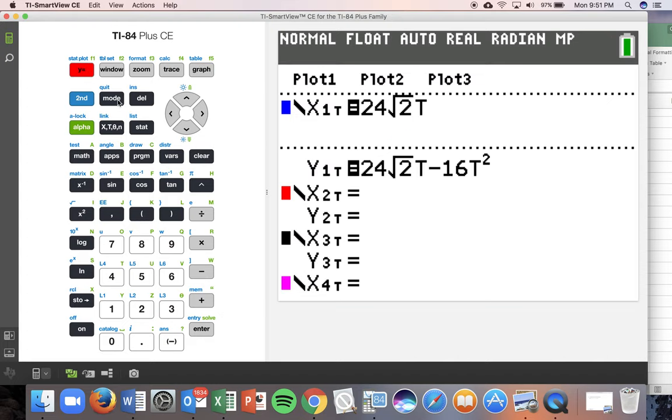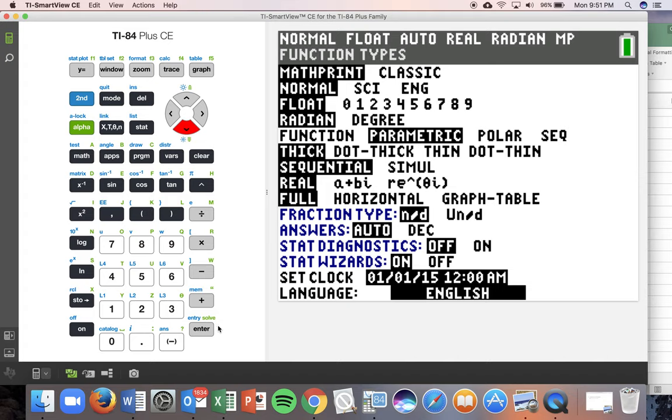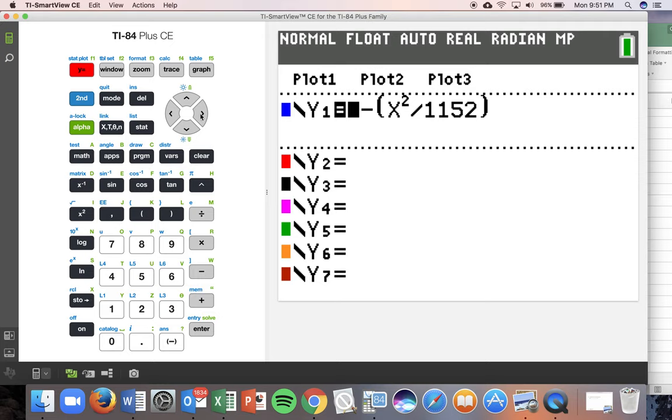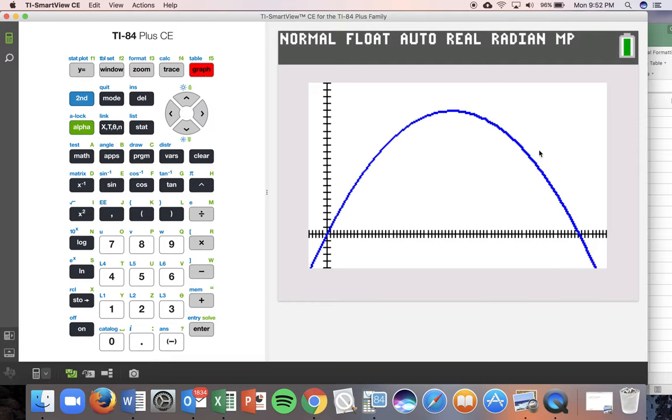Let's go back into our mode. Let's change it back to function mode. And we can graph the function that we found when we eliminated the parameter. The parametric equation that we just looked at, when we eliminated the parameter, we came up with the equation x minus x squared over 72. So I'm going to go ahead and graph this. And you should notice that we end up getting the exact same curve.